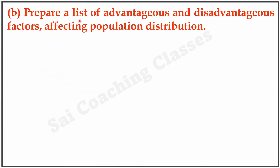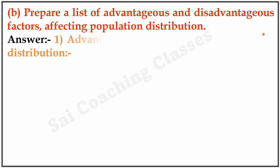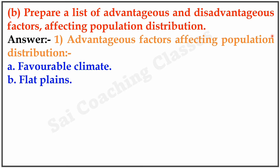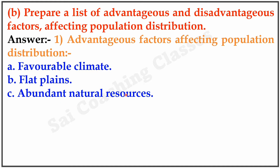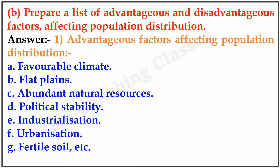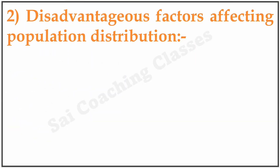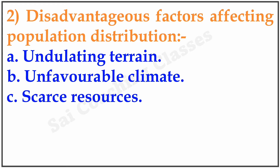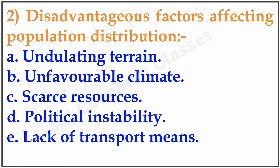B. Prepare a list of advantages and disadvantages of factors affecting population distribution. Advantages: Favourable climate, flat plains, abundant natural resources, political stability, fertile soil, etc. Disadvantages: Undulating terrain, unfavourable climate, scarce resources, political instability, lack of transport means, wars, etc.